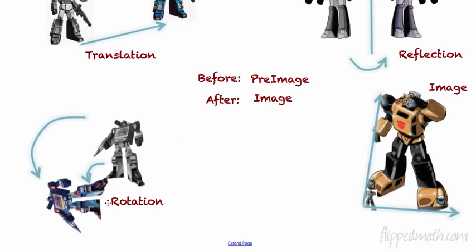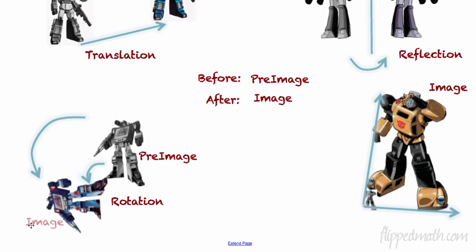The next type is a rotation. You always need a point to rotate around — think of hammering a nail into the paper and letting the image spin around it like a pinwheel. The pre-image here has been rotated 90 degrees to produce the image. One important thing: we are almost always going to rotate counterclockwise, not clockwise — but that will come in a different lesson.